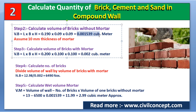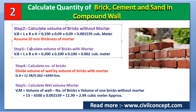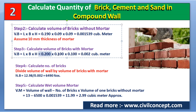In Step 3, we calculate the volume of a brick with mortar. Assuming 10 mm mortar thickness, we add 10 mm to each dimension: length becomes 0.20 m, width becomes 0.100 m, and height becomes 0.100 m. After calculating, the volume of one brick with mortar = 0.002 cubic meters.